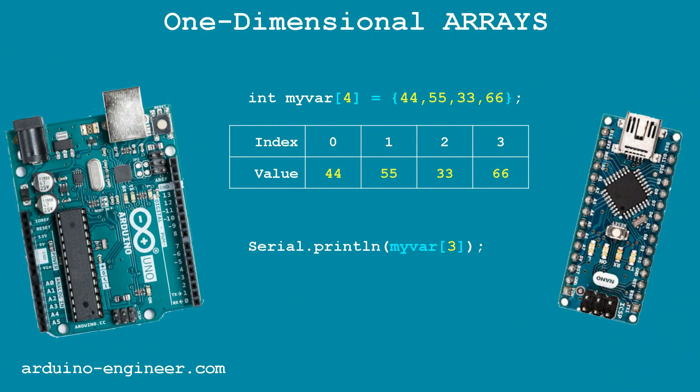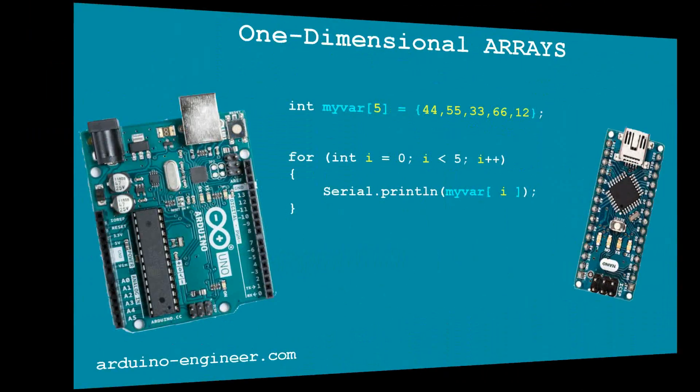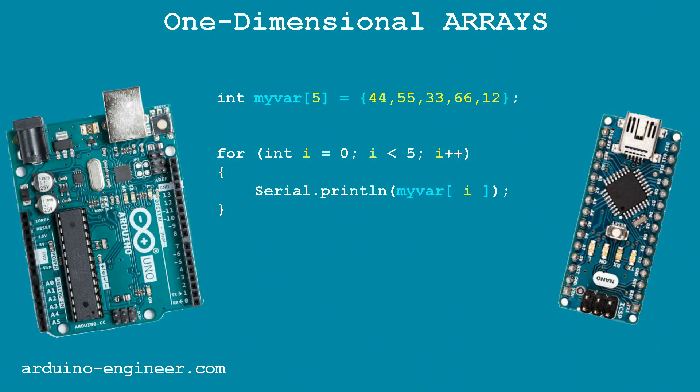The output of array cell values to the port monitor differs little from simple variables. To output all cells to the port monitor, there are no standard functions in the Arduino IDE, but you can create your own. Arrays in the Arduino platform are used in many tasks — for example to cycle through rows or data tables, and thus are used in search and other algorithms. In this example, using a for loop, all five elements of the array are sorted out one by one and their values are printed to the port monitor.